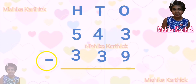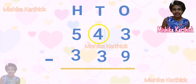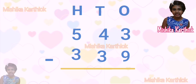543 minus 339. 543 means 500, 4 tens, 3 ones. Next, 339 means 300, 3 tens, 9 ones.